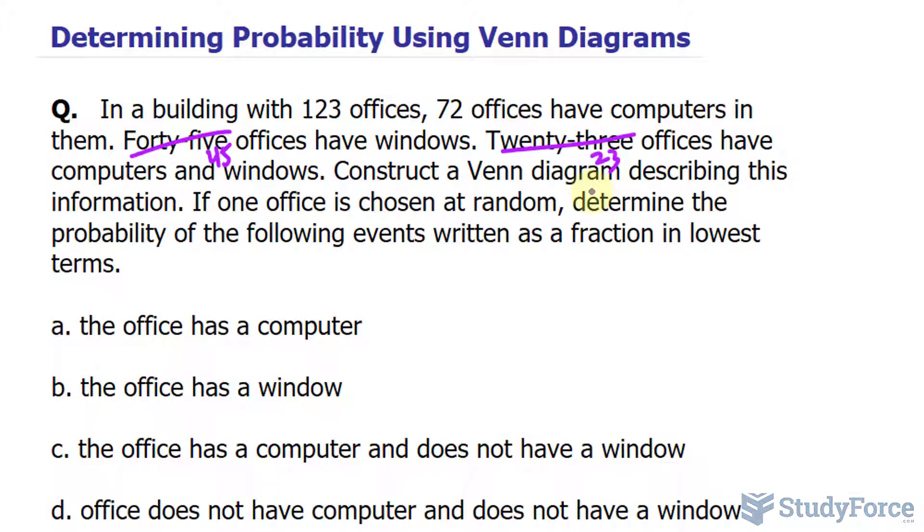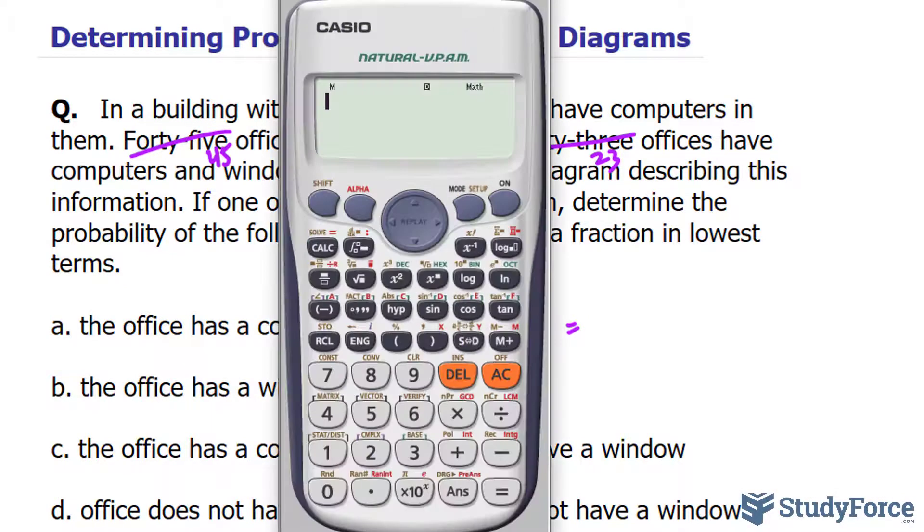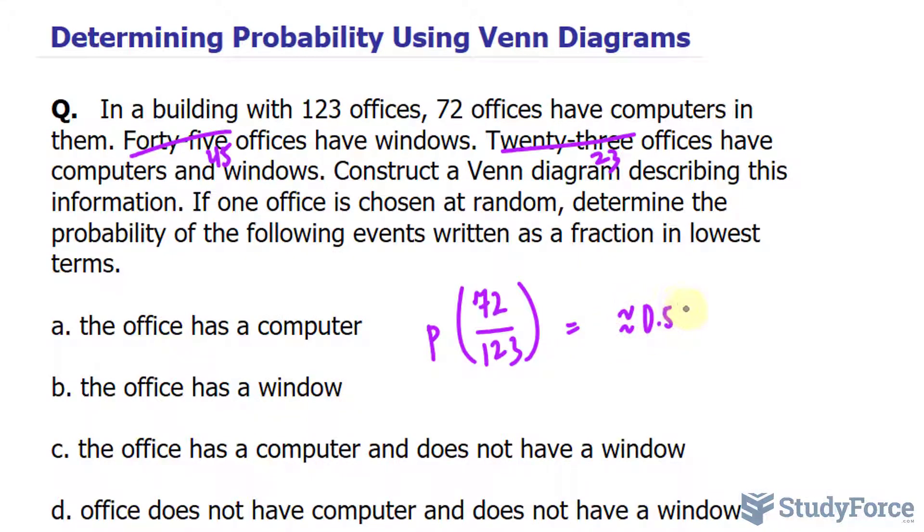In that very first problem, we're asked: the office has a computer. We're told in the question that 72 of these offices have a computer. So if we were to select one at random out of the 123, it's going to be 72 out of 123. That's the probability that you would have a computer in the one that you select. 72 divided by 123 gives us 24 over 41, or approximately 0.59.